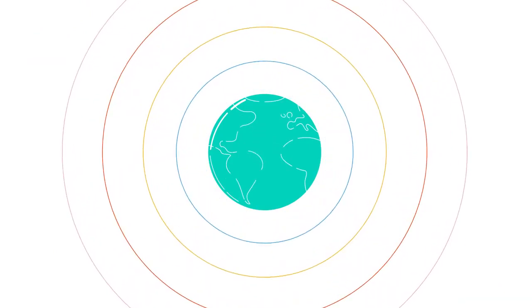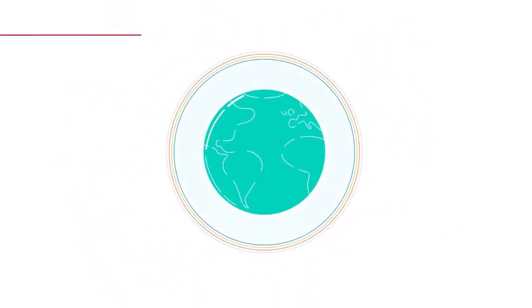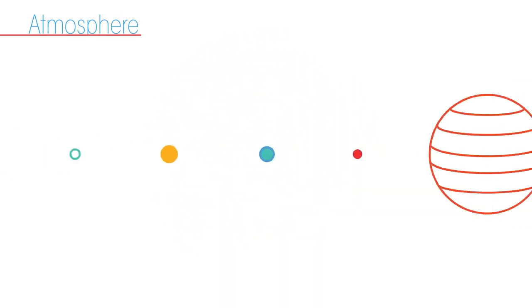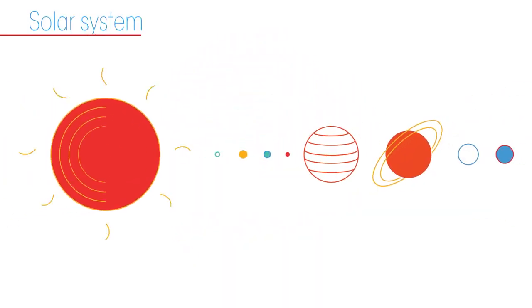Our rocky planet Earth is wrapped up in a gaseous blanket known as the atmosphere. It's the atmosphere that we can thank for all life on Earth. In fact, it's the only planet in our solar system with an atmosphere that can sustain life.